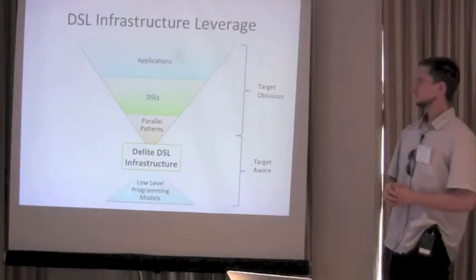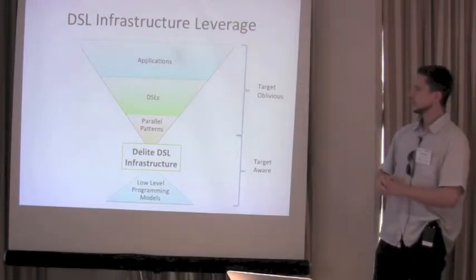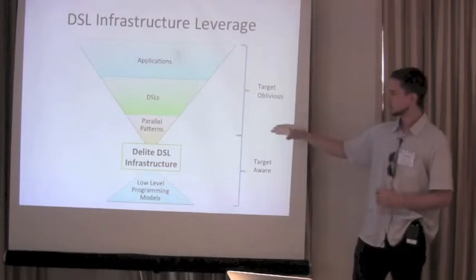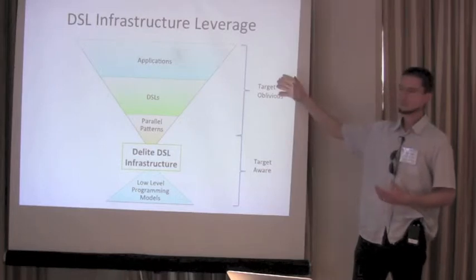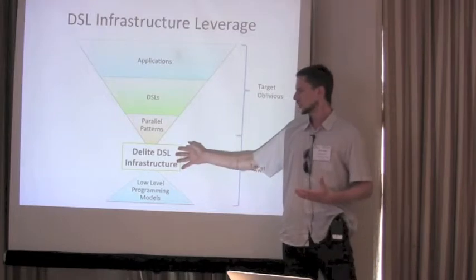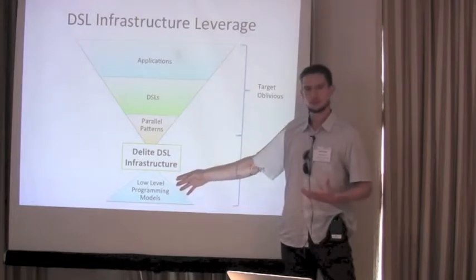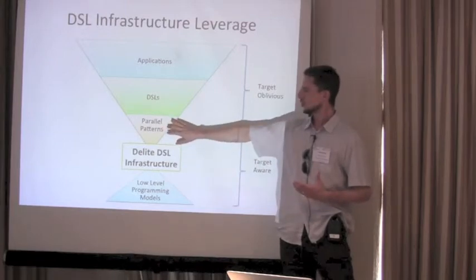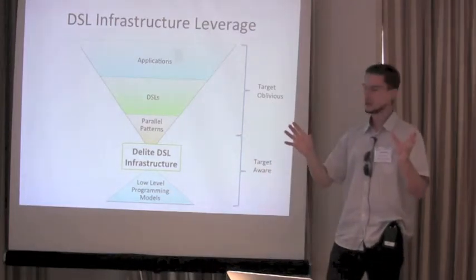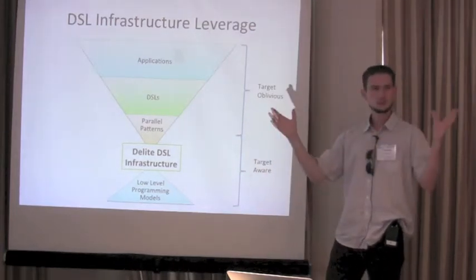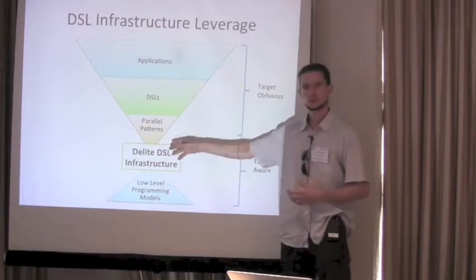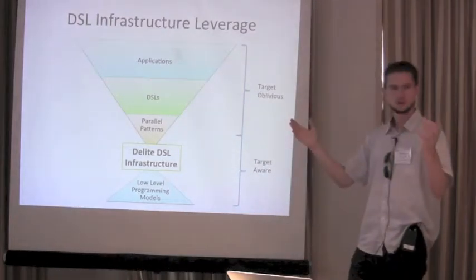The big picture here is a split between components that are target-aware and target-oblivious. The DSL infrastructure maps from parallel patterns to low-level programming models. By supporting a small number of parallel patterns, we can support a much larger number of DSLs, and using these DSLs we can support an even larger number of applications. With this small bit of infrastructure, we can leverage it to handle many more interesting cases.